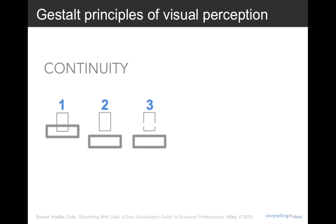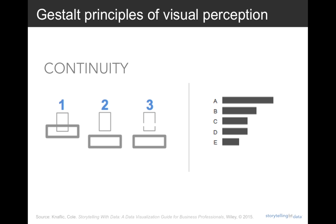Next is the continuity principle. It's similar to closure — if I pull objects apart, most people will expect to see continuous lines, whereas they could be separate arcs. Our eyes like to draw continuous lines even where they may not explicitly exist. We can use this to strip things out of our data visualizations. For example, on the right I've taken out the y-axis line altogether. Your eyes still see it because of the continuity of space between the text and the data. The more we strip away, the more our data stands out.